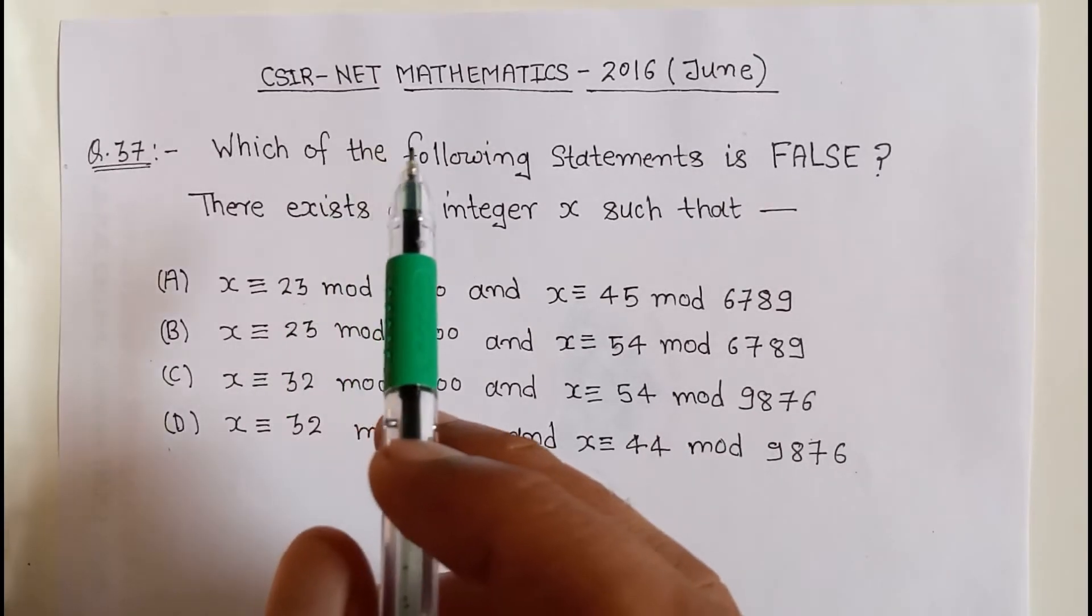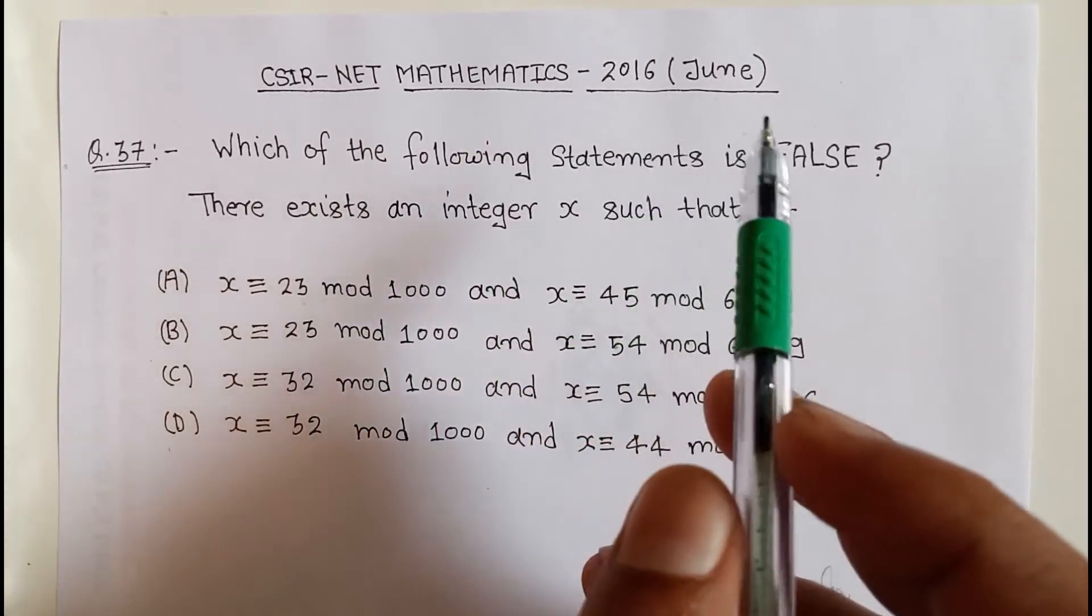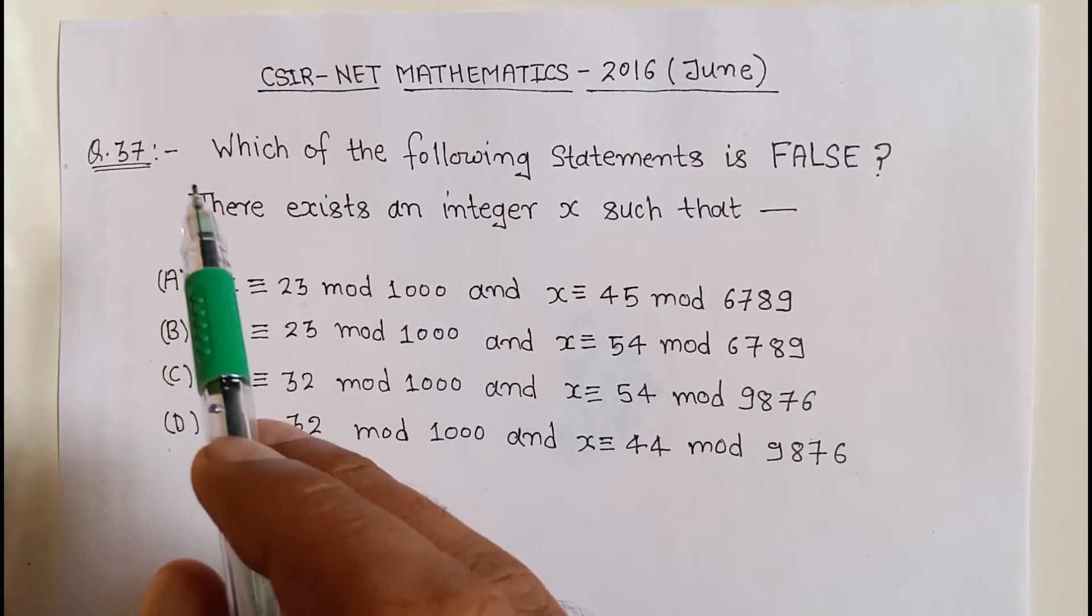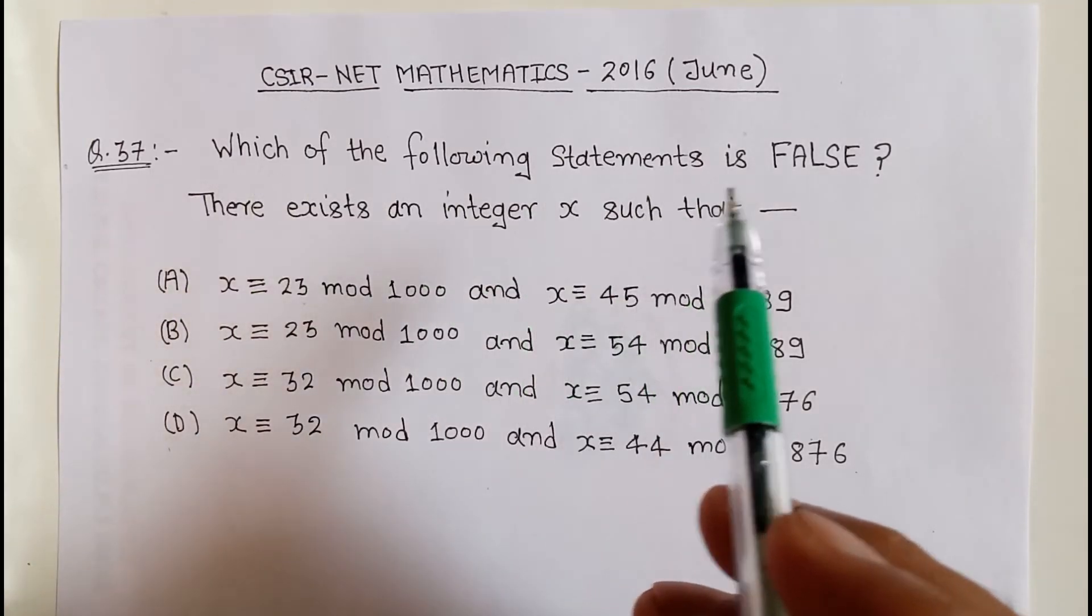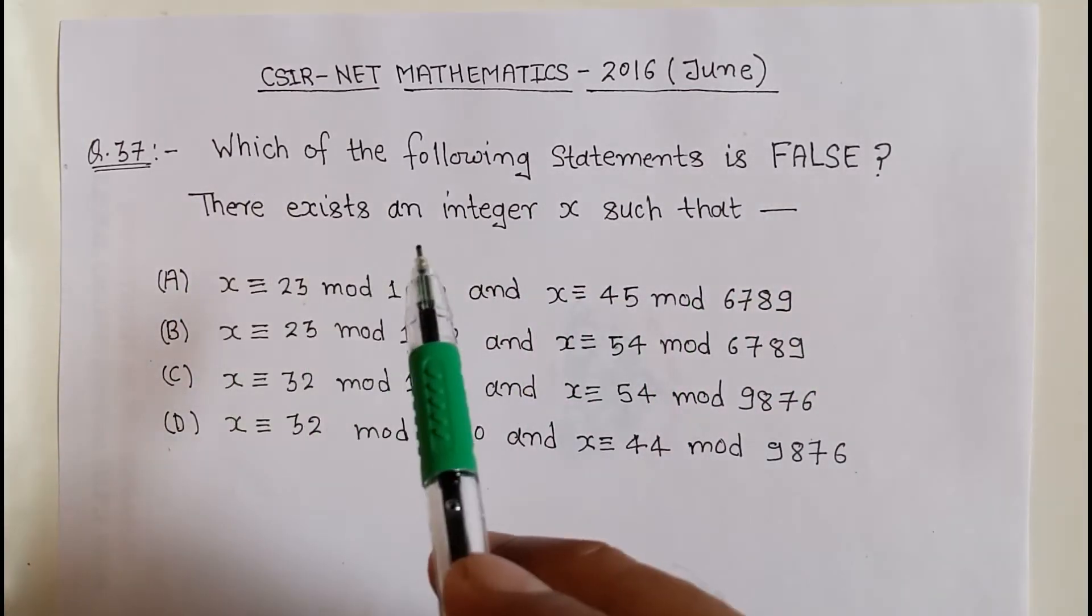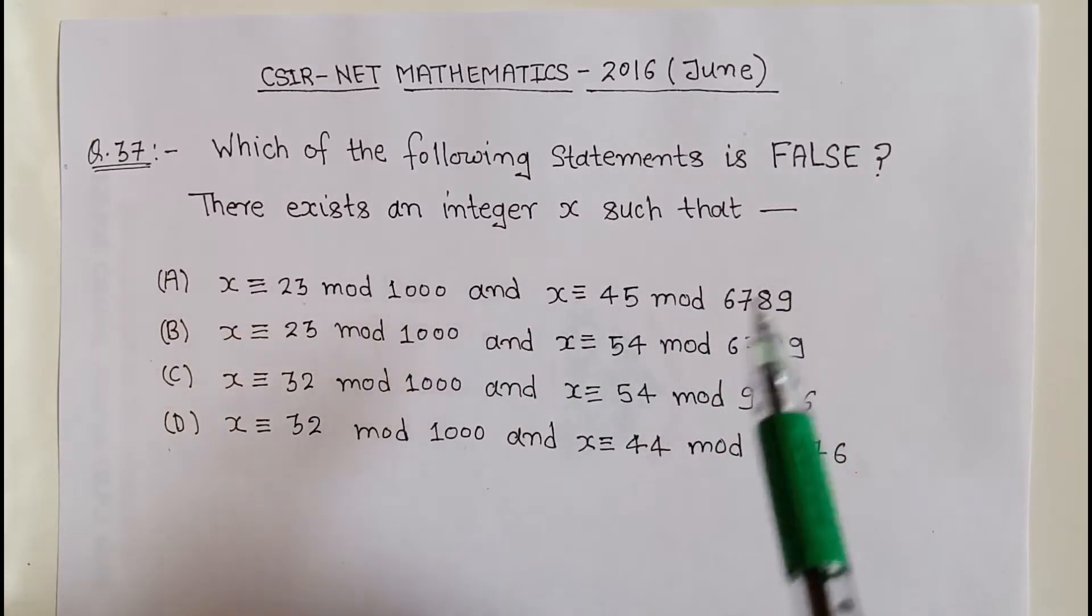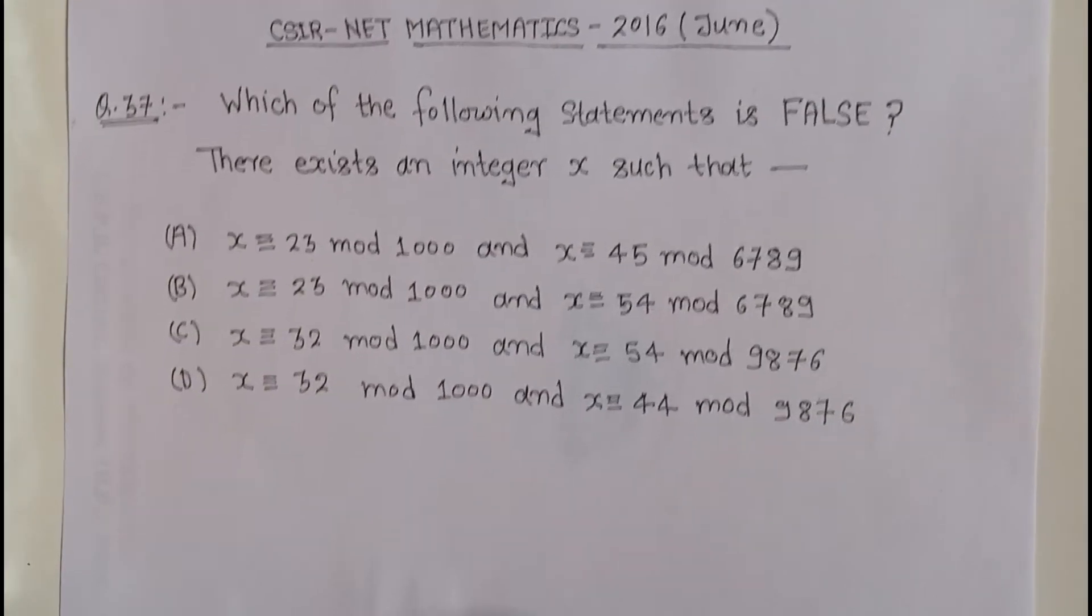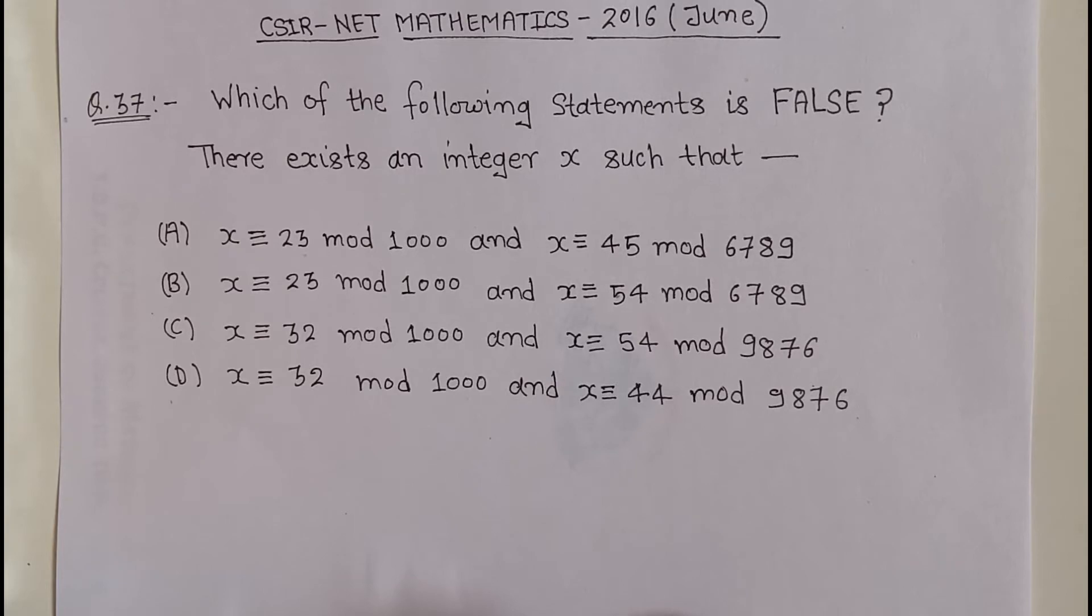CSIR NET Mathematics 2016 June question number 37: Which of the following statements is FALSE? There exists an integer x such that... This is part B of the question, so one option is correct.